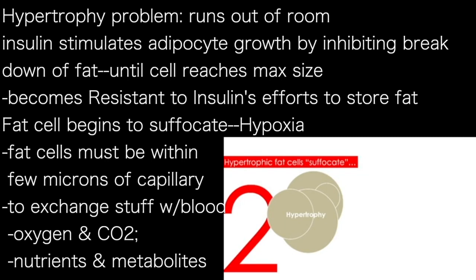The second problem with hypertrophic adipocytes is that they start to suffocate — or to use a more cellular term, they begin to experience hypoxia. It's a little-known fact of cell biology that a cell must be within just a few microns of a capillary. A capillary is the smallest functional unit of a blood vessel, of a cardiovascular system. It is at the capillaries where we exchange substances with cells and tissues — giving out oxygen, taking in CO2 into the blood, giving nutrients, taking in metabolites.